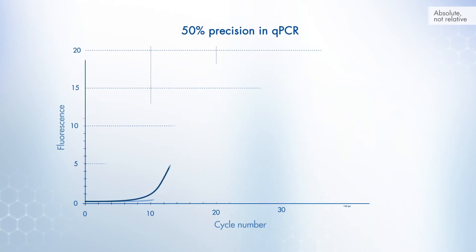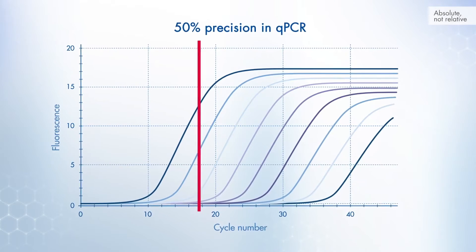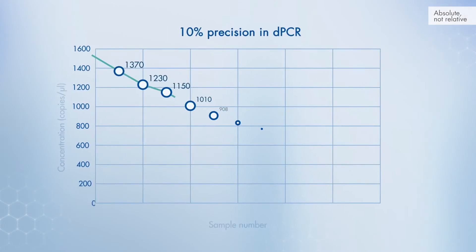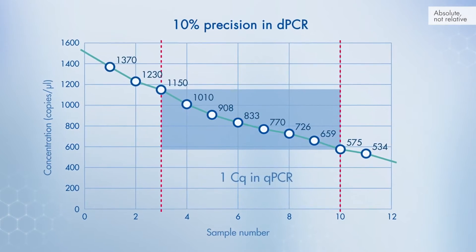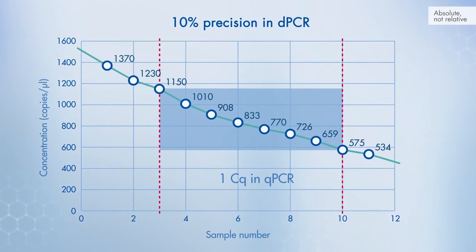What do you mean? Well, in QPCR you can detect concentration changes of 1 CQ, which corresponds to a 2-fold concentration change. Actually, you can detect a concentration change of 1.5-fold, which represents 50%. In digital PCR, we can detect concentration changes down to 10%.